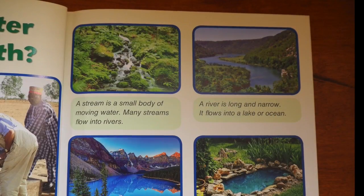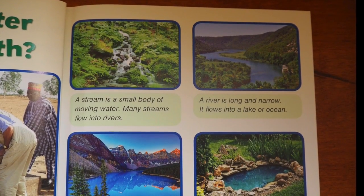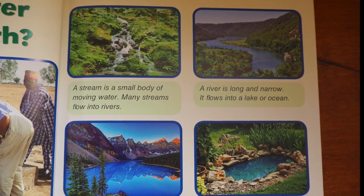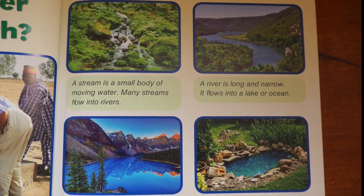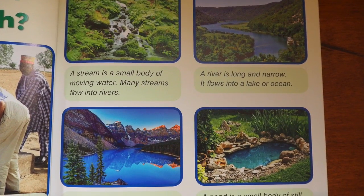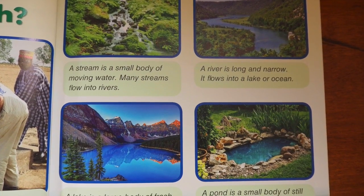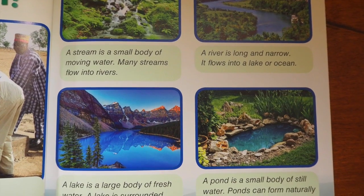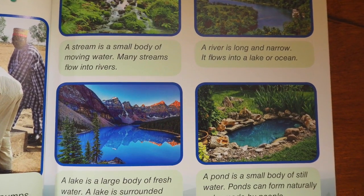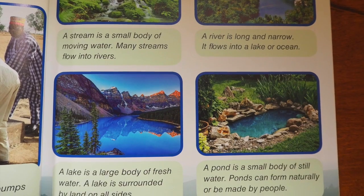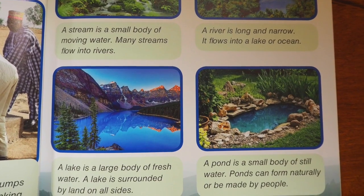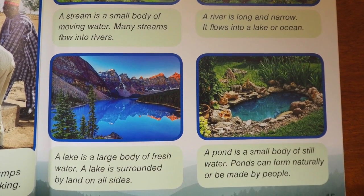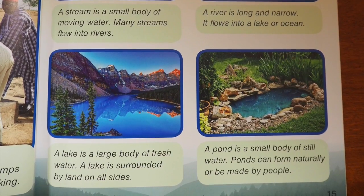A stream is a small body of moving water, and many streams flow into rivers. A river is long and narrow and flows into a lake or ocean. A lake is a large body of freshwater surrounded by land on all sides. A pond is a small body of still water that can form naturally or be made by people.